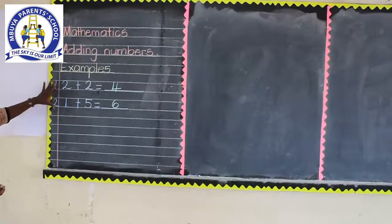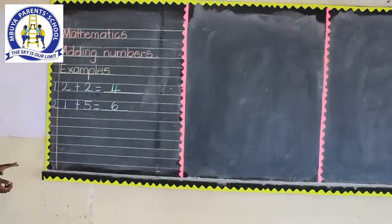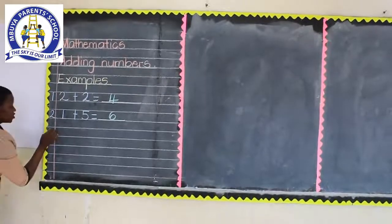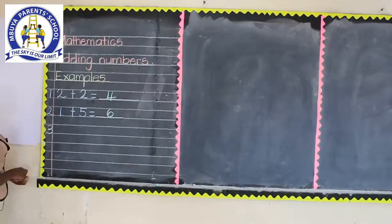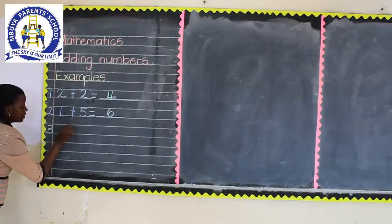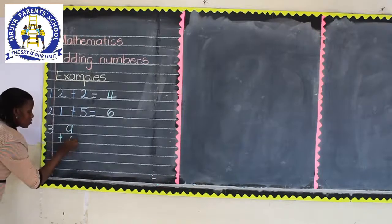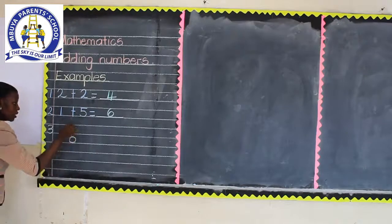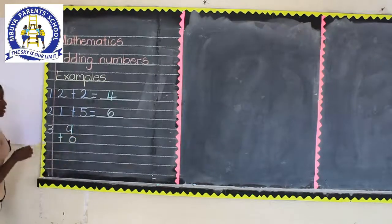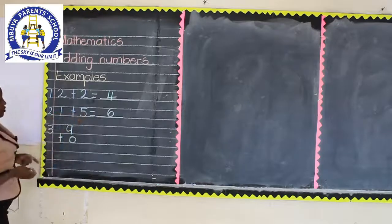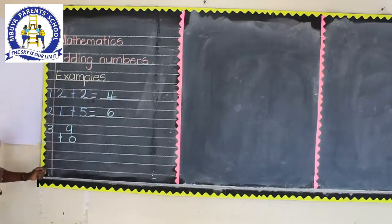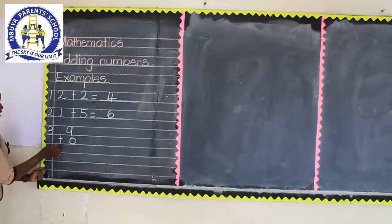How are we together? Now, we can add the numbers when they're like this. However, we can also change and we say 9 plus 0. We can make them to stand like this. These ones, they were lying on the ground. But this time, we want to add when they're standing. How are we together?